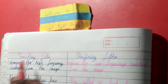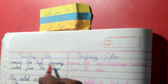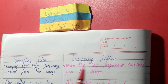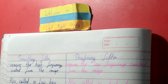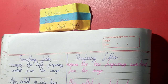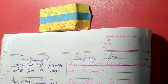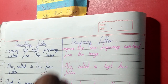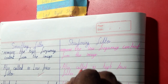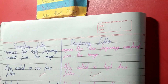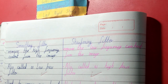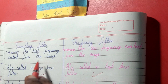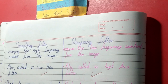The smoothing filter removes the high frequency content from the image, while the sharpening filter removes the low frequency content. So they are, in a way, opposite of each other. The smoothing filter is also called a low pass filter because it allows only low frequency content to pass, and the sharpening filter is called a high pass filter because it only allows high frequency content to pass.